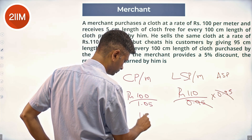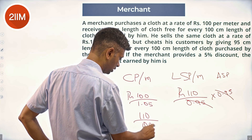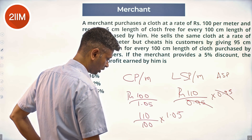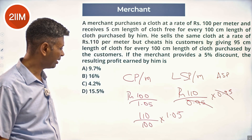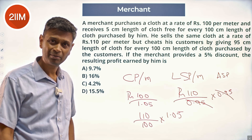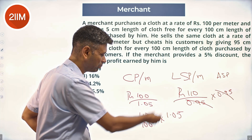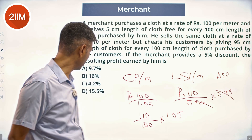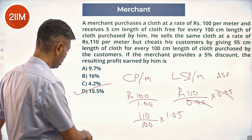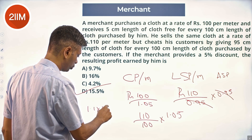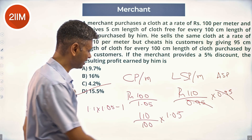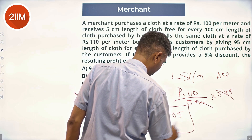So we get: hundred and ten by hundred into one point zero five. That is hundred and ten into one point zero five divided by hundred. One point one and one point zero five — minus one. This is ten percent and five percent multiplied, which will be a little more than fifteen percent. So the answer is one point one into one point zero five minus one. I'm doing just selling price divided by cost price.